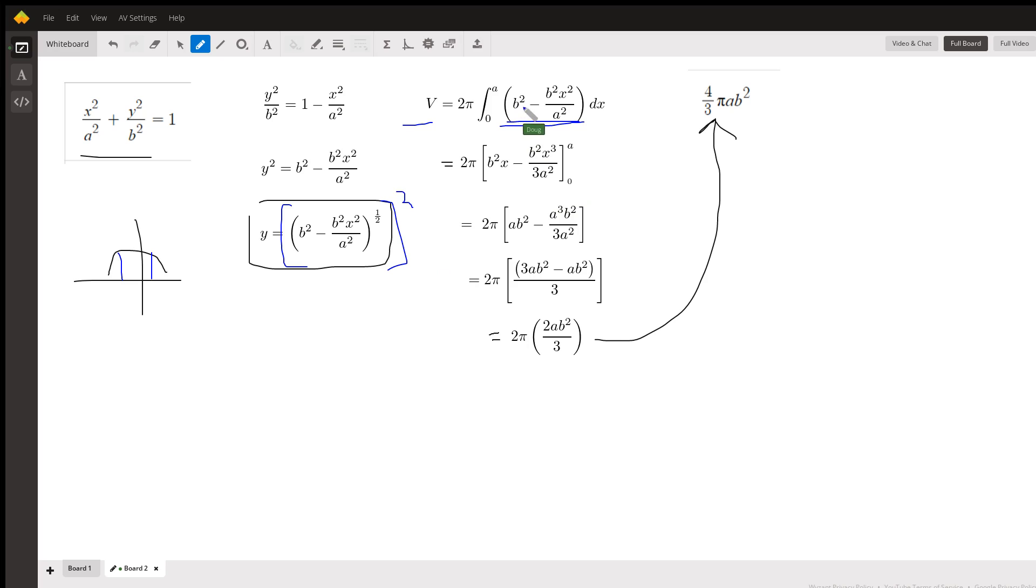So the anti-derivative of b squared is just b squared x. Remember, b and a are constants. Here in the second term, I'll raise this exponent by one, which gives me a three, then multiply by the reciprocal of the new exponent, which gives me this three in the denominator.